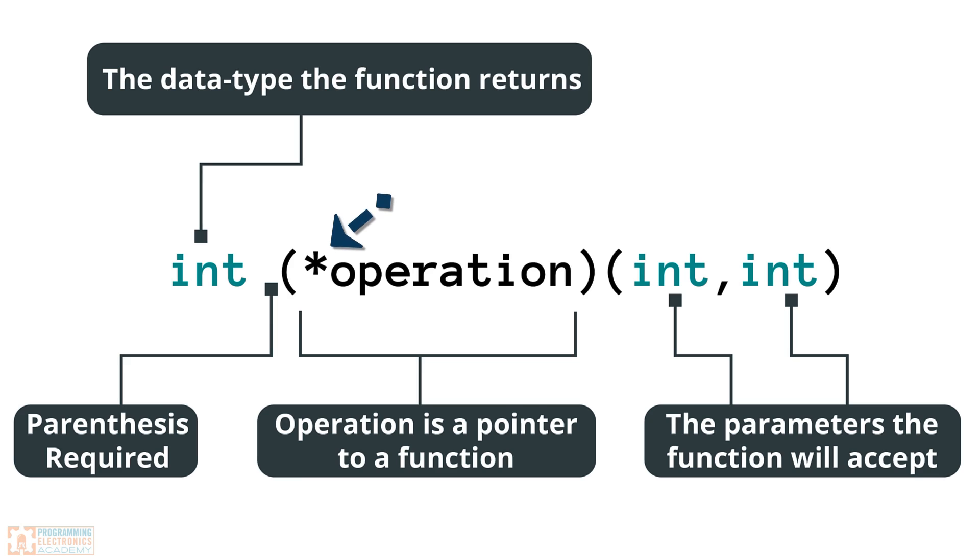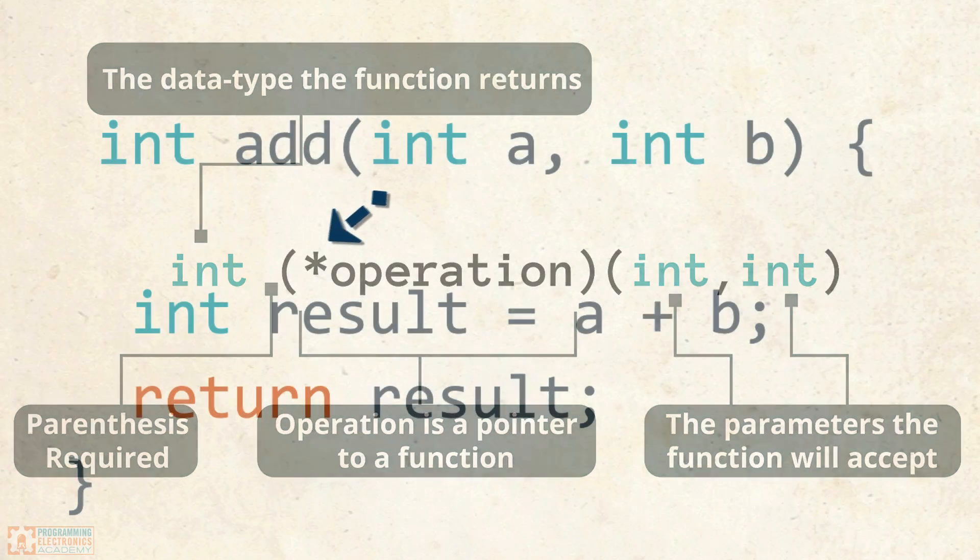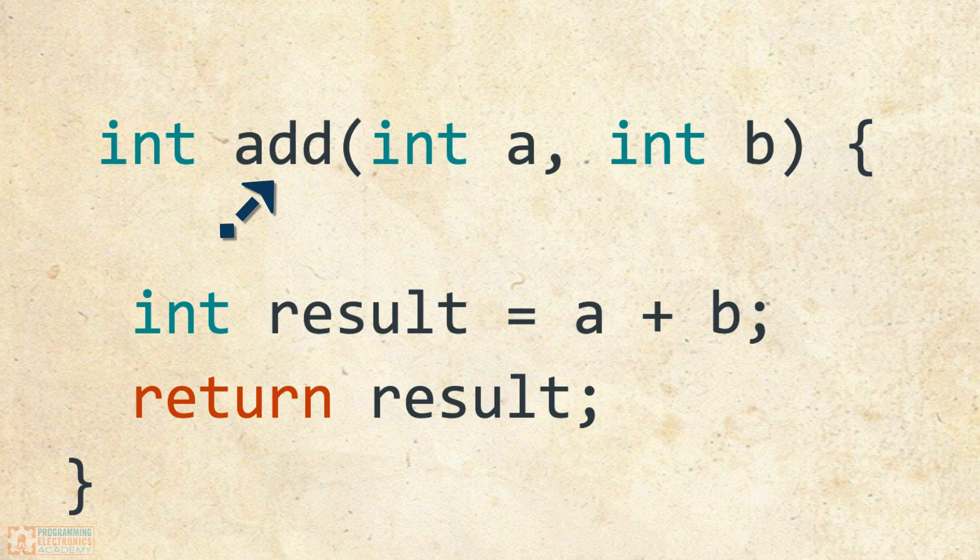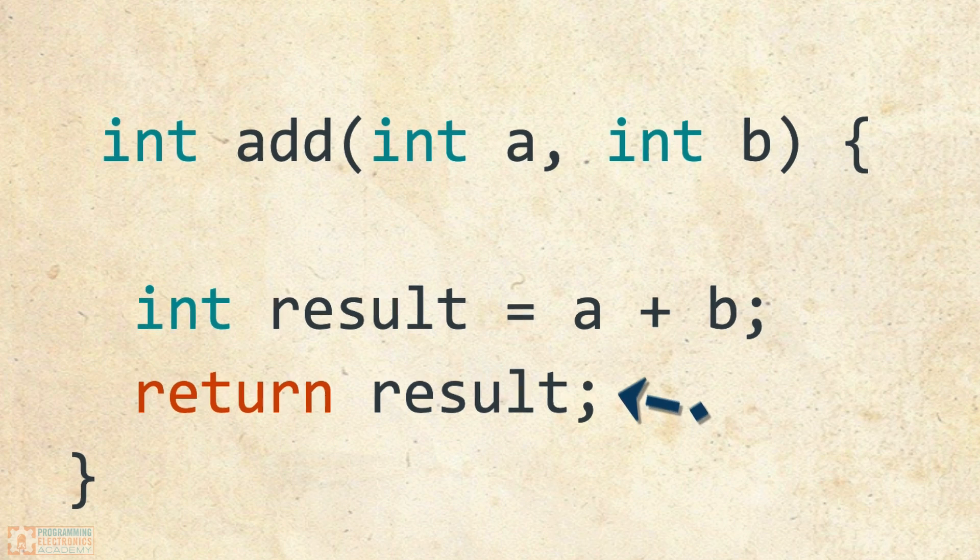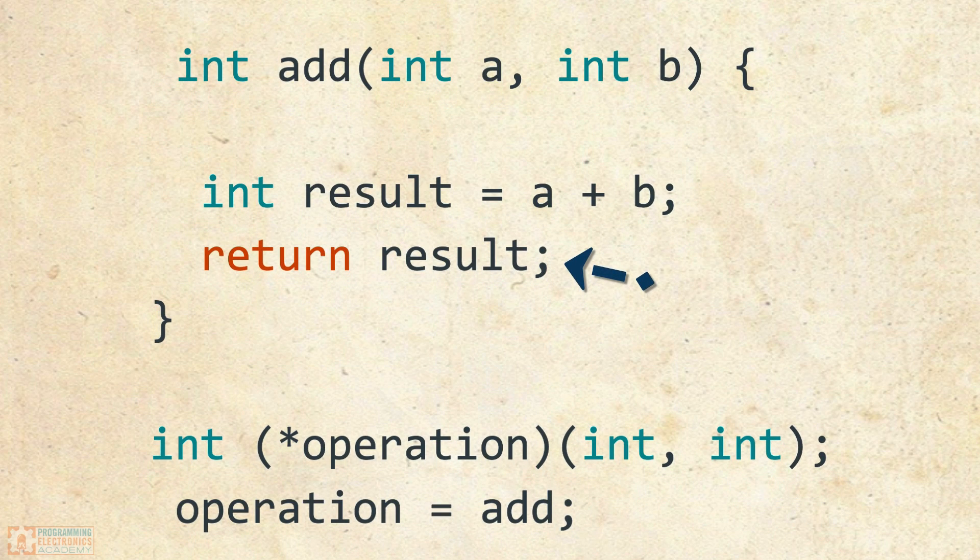So how can we actually point this function pointer? Well, let's revisit that add function we talked about. Add takes two integers as its arguments, the parameters that it requires, and it's going to return an integer. So this is a good match. Our operation pointer could point to this add function. So how do we actually point operation at this add function? Well, it's as simple as setting operation equal to add.